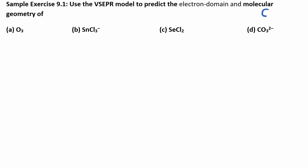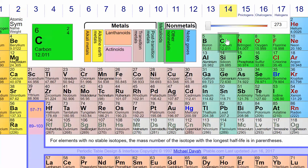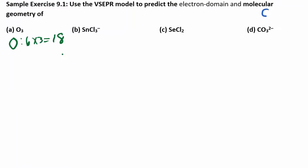We want to use the VSEPR model to predict the electron domain geometry and molecular geometry. Let's start with O₃. The first step is to draw the Lewis structure — figure out how many valence electrons you have. Oxygen has six valence electrons and I have three oxygens, giving me 18. Go back to the periodic table: one, two, three, four, five, six — everybody here has six valence electrons. Three times six gives me 18.